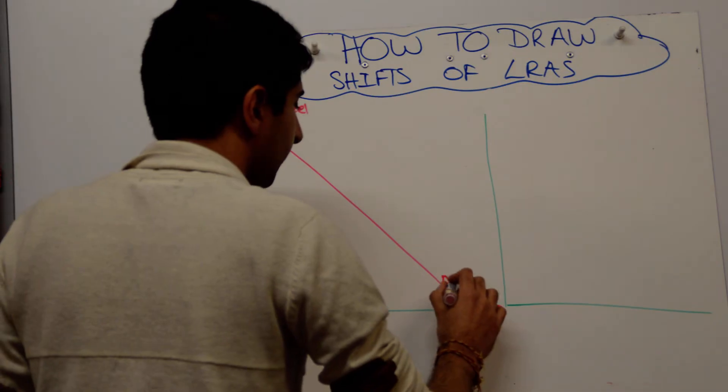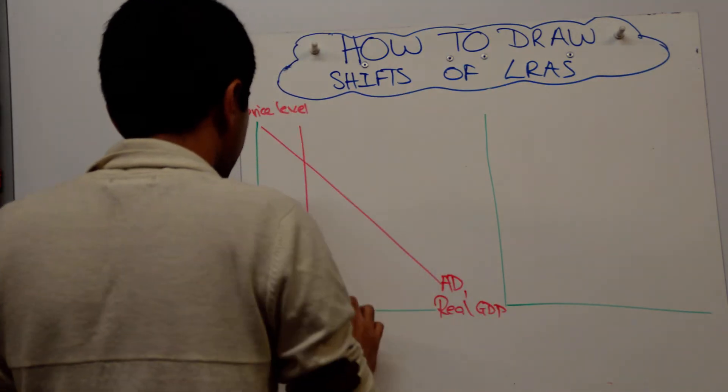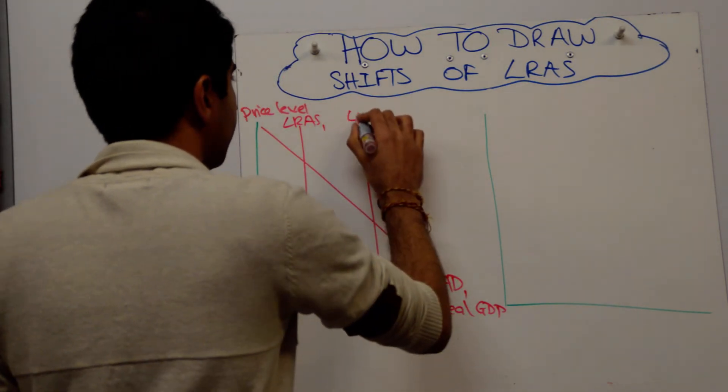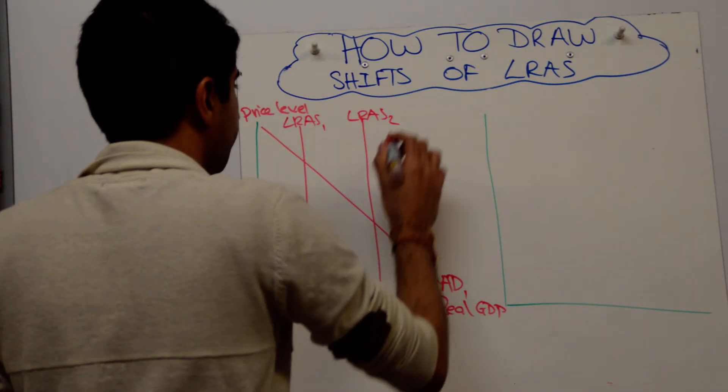So, AD first. There's AD 1. There's LRAS 1. And shift it simply to the right to LRAS 2. Alright?